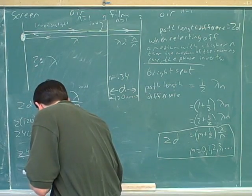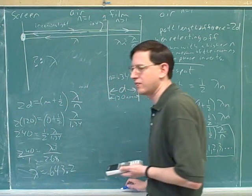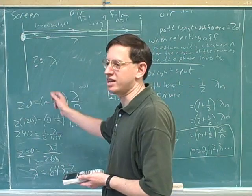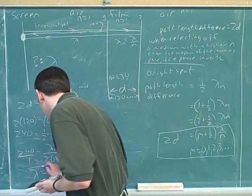You got 643.2? Correct. And what would be the units on that? Nanometers. Because we put in nanometers. Since we put in nanometers, we know we'll get out nanometers.